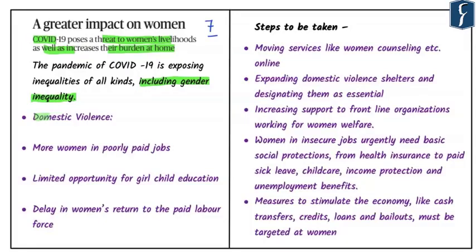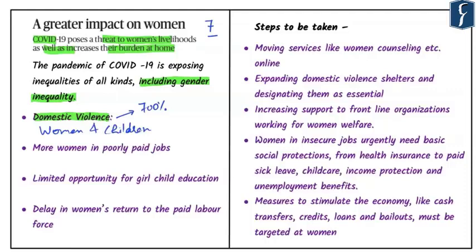After the lockdown was implemented, there has been a tremendous increase in domestic violence globally. The largest support organization in the UK reported a 700 percent increase in calls, indicating a surge in domestic violence. Women and children both are at the receiving end of domestic violence. Since lockdown is continuing for a long period, there seems to be little respite for those suffering these problems.